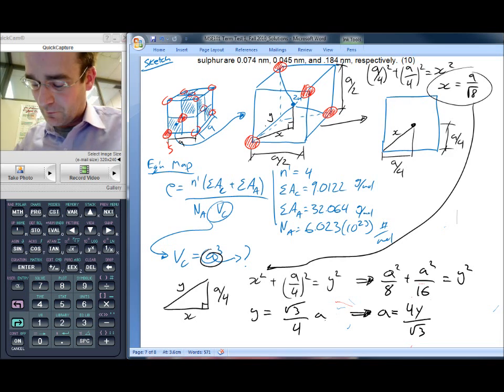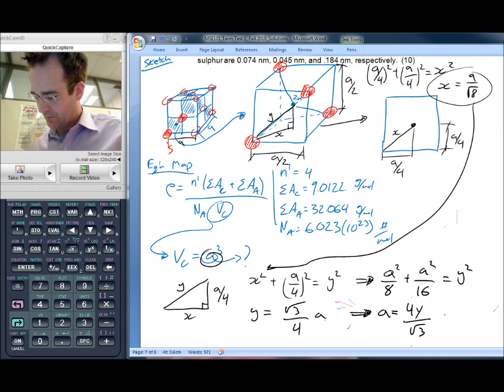And we can also go back to our structure here that we drew, our sketch, and realize that the anion touches the cation along that line Y. So that means that Y is equal to RC plus RA, or A is equal to 4RC plus RA all over root 3.